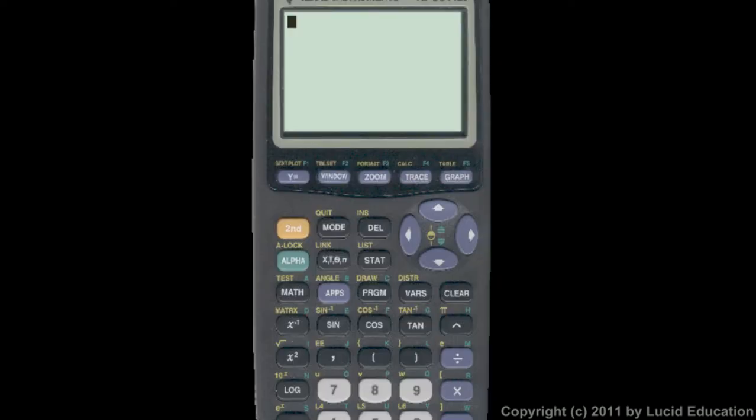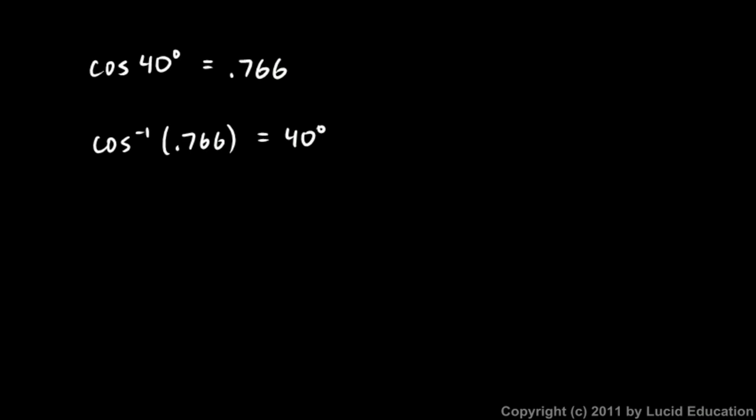And real quick, let's look at the cosine. The cosine works the same way. If we say cosine, and you could use any number here, but the cosine of 40 degree angle is 0.766, and if I say the inverse cosine, and on this calculator, that's the second function on the cosine key, that's the inverse cosine of 0.766, that should give me something real close to 40 degrees, and there it is. And so there you see that written, the cosine of 40 degrees is 0.766, the inverse cosine of 0.766 is 40 degrees.